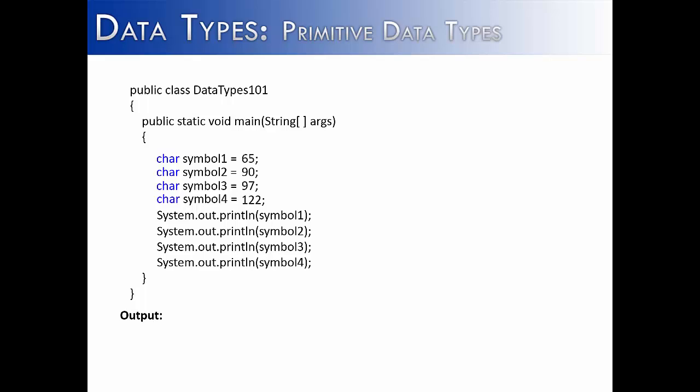The character data type has a special relationship with ASCII. And ASCII is just a standard by which computers can communicate with one another. Using the ASCII standard, we can type in a numeric value and get back its ASCII equivalent. And this is what the ASCII equivalent of capital A, capital Z, lowercase a, and lowercase z are: 65, 90, 97, and 122.